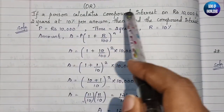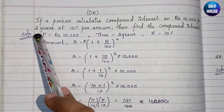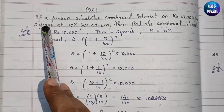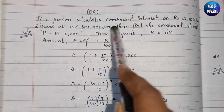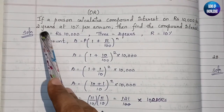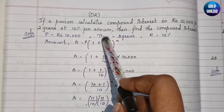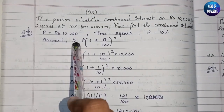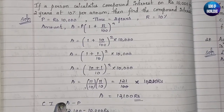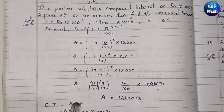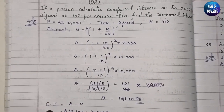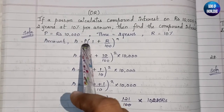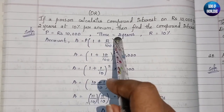The next question: a person calculates compound interest on ₹10,000 for 2 years at the rate of 10% per annum — find the compound interest. So Principal P = ₹10,000, time n = 2 years, rate r = 10%. To find compound interest, we use CI = Amount − Principal. First we need to find the amount using the formula A = P × (1 + r/100)^n.